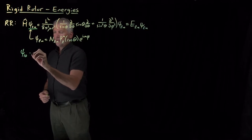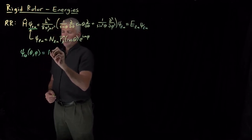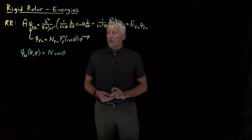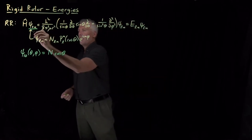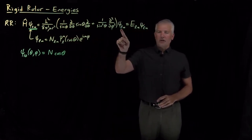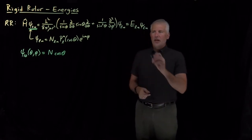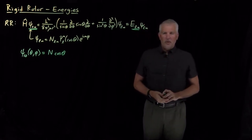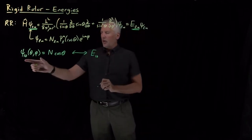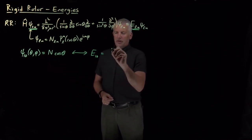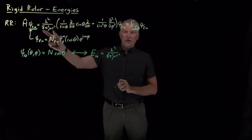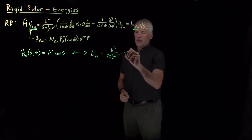For example, the 1,0 wave function, the one with quantum numbers L equals 1 and M equals 0, was N cosine theta. For every one of these wave functions that we write down, if it solves Schrödinger's equation, meaning the Hamiltonian acting on the wave function gives us back a constant multiplied by the wave function, we can write down the energy that's associated with that wave function. In the two cases we've seen so far, when the wave function is N times cosine theta, the energy of that particular wave function is some constants that are just the constants in front of the Hamiltonian here, multiplied by 2.